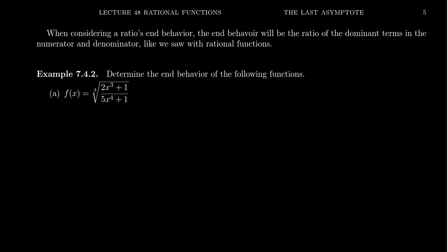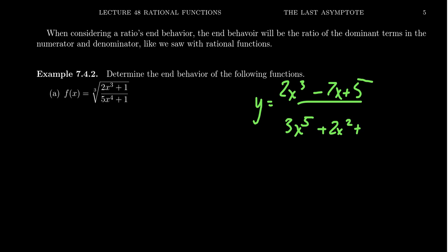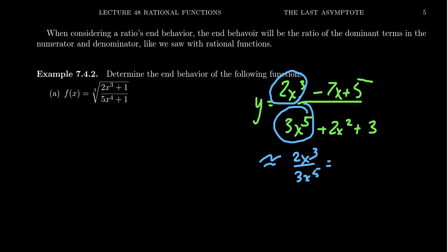In this video, I want to focus on ratios. When considering the end behavior of ratios, the end behavior will be the ratio of the dominant term in the numerator and the dominant term in the denominator. We saw this with rational functions previously. So if I had something like y equals 2x cubed minus 7x plus 5 over 3x to the fifth plus 2x squared plus 3, we looked at the terms on top and bottom: 2x cubed on top, 3x to the fifth on the bottom. So this function is approximately 2x cubed over 3x to the fifth, which simplifies to 2 over 3x squared. As x goes to infinity, this goes towards 0 — this is what we called a bottom-heavy function.